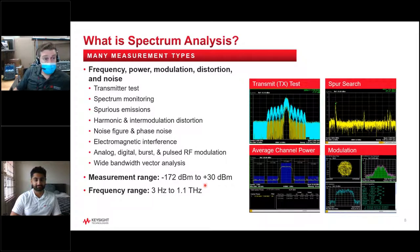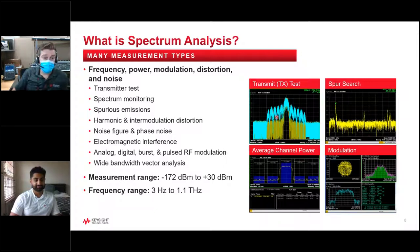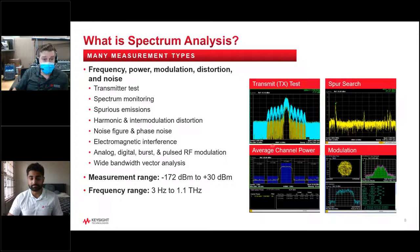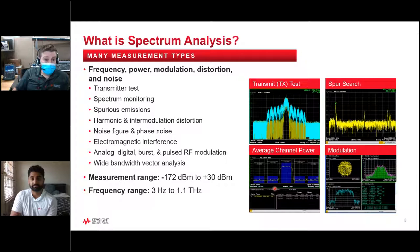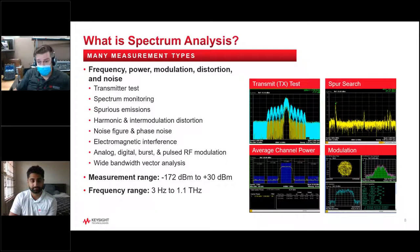Some of the other measurements we look at with a traditional analyzer: you could do a max hold transmitter test, and you can see we're increasing the amplitude until we see harmonic distortion. If we are looking at a modulated signal, we want to know about adjacent channel power, average channel power, and some of the modulation metrics. There's a vast array of measurements we can do with a spectrum analyzer.